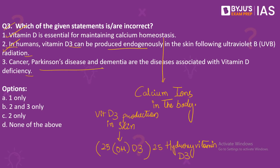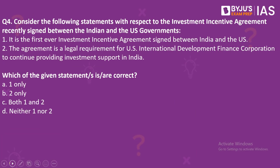Coming to statement 3: Vitamin D is not only important for bone health but also has multiple biological functions. Vitamin D deficiency can cause cancer, Parkinson's disease, dementia, and also rickets in children. So statement 3 is also correct. Therefore, the right answer is option D — none of the above — because the question asked for incorrect statements.